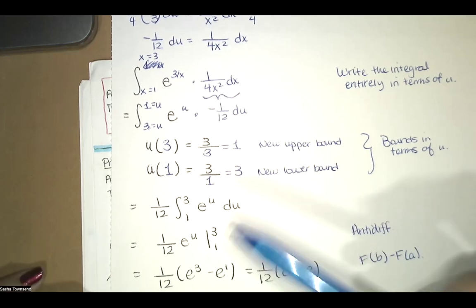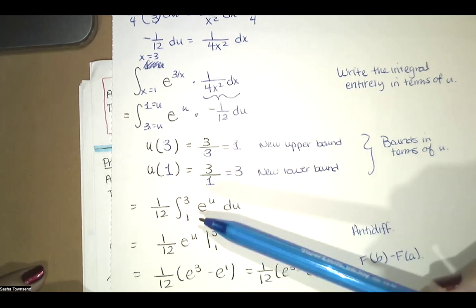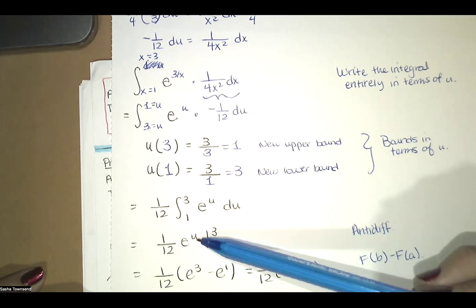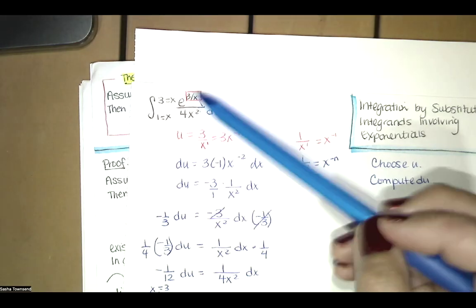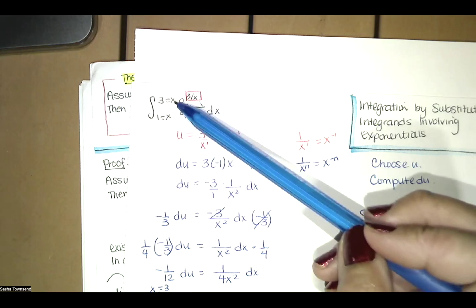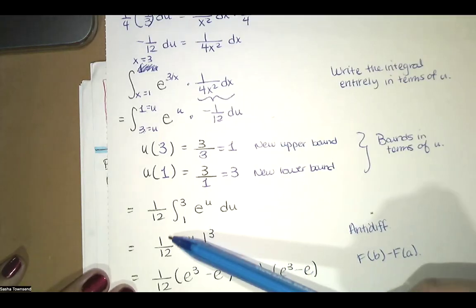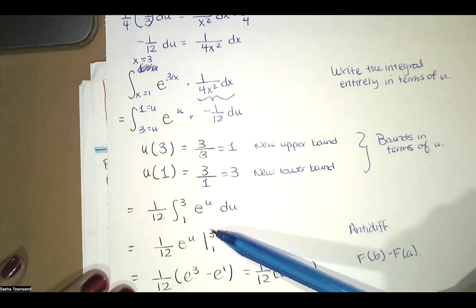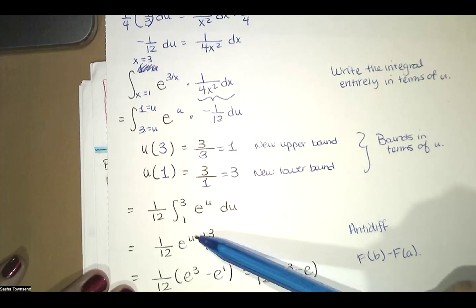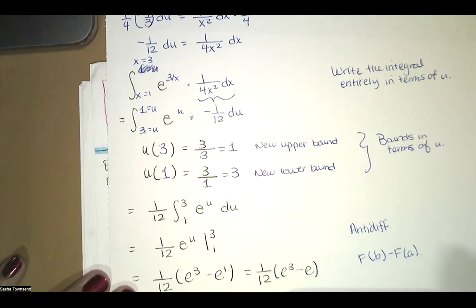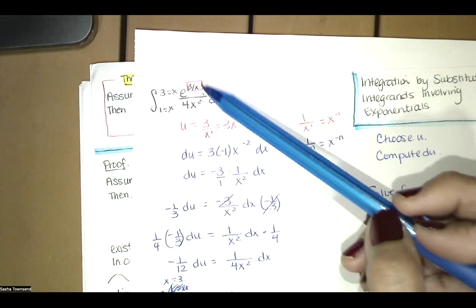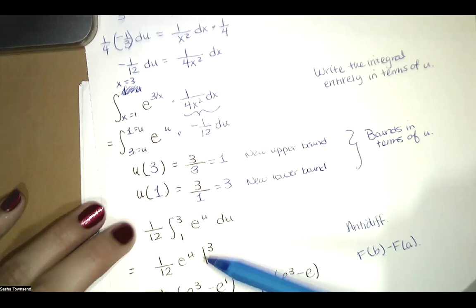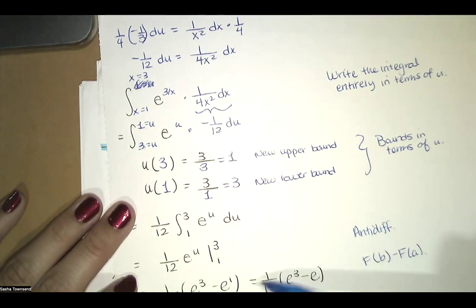Notice that we do not have to go back to x or replace u with 3 divided by x again as we did with indefinite integral problems. Since this is a definite integral, we're transforming the region bounded above by the original function between x equals 1 and x equals 3 into an equivalent region. It turns out that the area under the curve of 1/12 e to the x from x equals 1 to 3 gives the same value — we're almost warping the area, changing this function into a sort of equivalent function, and getting the same result.